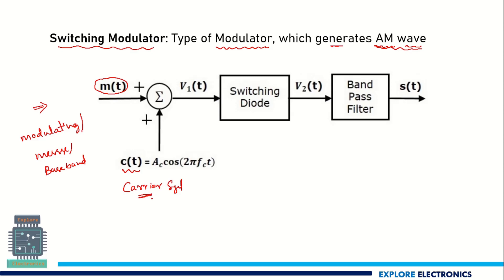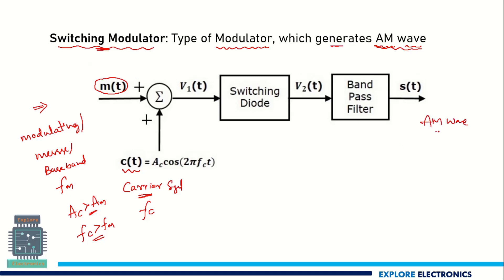In AM, we require a carrier signal with high frequency Fc compared to Fm of the modulating signal, and also the amplitude Ac of the carrier signal should be greater than Am of the modulating signal. These are the two conditions we need to satisfy while doing amplitude modulation. Now coming back to this switching modulator, this circuit is going to generate the AM wave at the output. We require an adder, or we call it a summer, to add M(t) as well as C(t). The carrier signal and the message signal are going to be added up here.